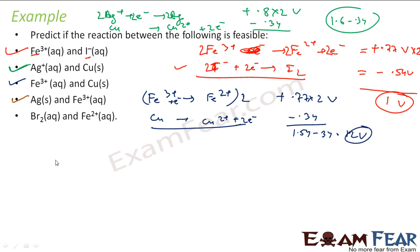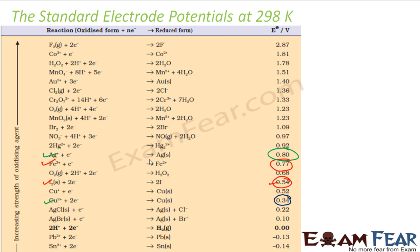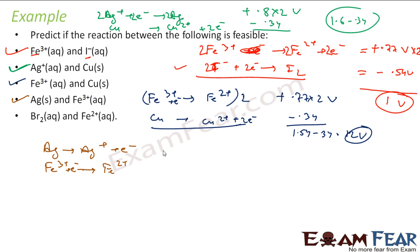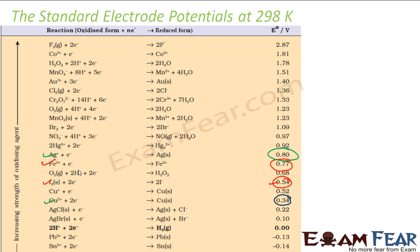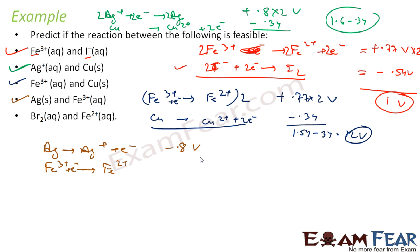Now let's take the fourth example: Ag and Fe³⁺. Here, silver is oxidized — Ag gives one electron to become Ag⁺, and Fe³⁺ is reduced to Fe²⁺ taking that electron. From the chart: Ag to Ag⁺ is minus 0.8 V, and Fe³⁺ to Fe²⁺ is plus 0.77 V. The net value is minus 0.03 V, so this reaction is not feasible.